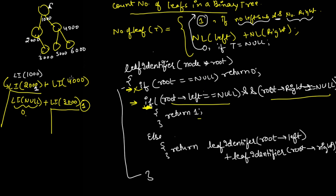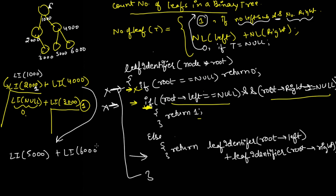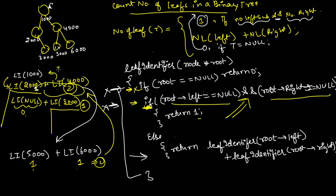This value 1 is returned to `li(2000)`. Now we call `li(4000)`: the null check does not execute, and since node 4000 has both left and right children the second condition is also false, so the else executes calling `li(5000)` plus `li(6000)`. For node 5000 both pointers are null, so it returns 1. Node 6000 also returns 1. So `li(4000)` returns 1 plus 1 equals 2. The total is 1 plus 2 equals 3. If you look at the tree, there are exactly 3 leaves, confirming our program is working correctly.